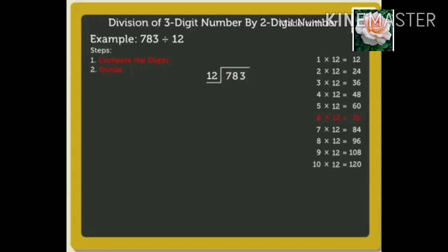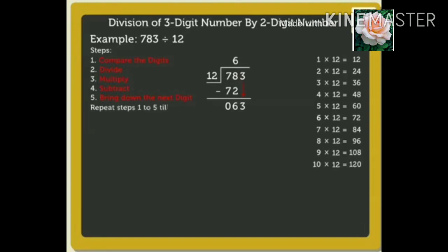Step 3 is to multiply. As we know, 12 times 6 is equal to 72. Write 72 under 78. Step 4 is to subtract 72 from 78, which equals 6. Step 5 is to bring down the next digit, that is 3. After bringing down the digit, we repeat steps 1 to 5 until there are no more digits to bring down. So, we now compare 63 and 12. Here, 63 is greater than 12, so we can divide 63 by 12.